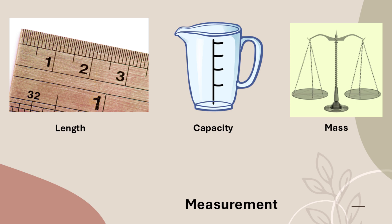Mass is the amount of matter in an object — it tells us how much a thing weighs. The commonly used units for measuring mass are grams for light objects and kilograms for heavy objects. Kilogram is written as kg and gram is written as g. Manual weighing balances and electronic balances are the common instruments used for weighing — you must have seen these in grocery shops.